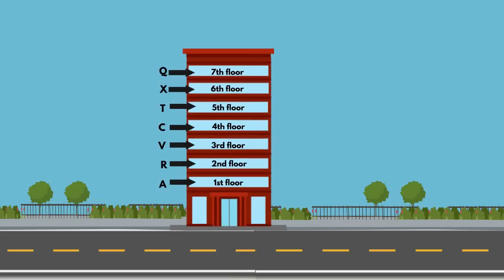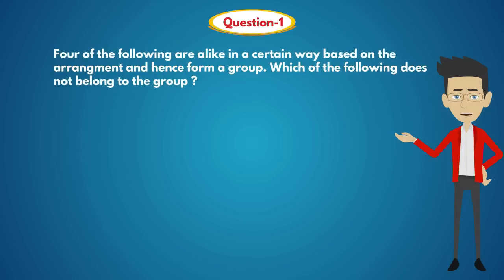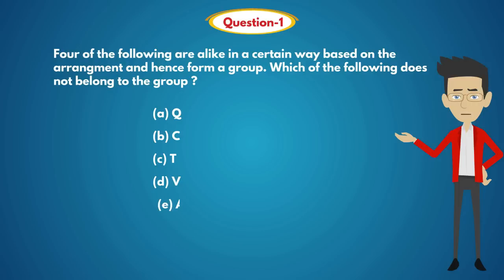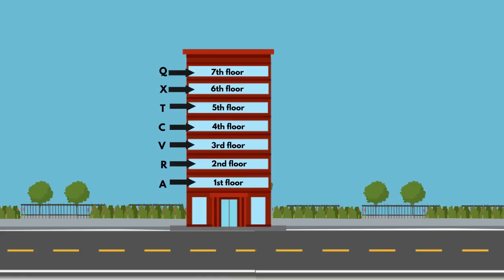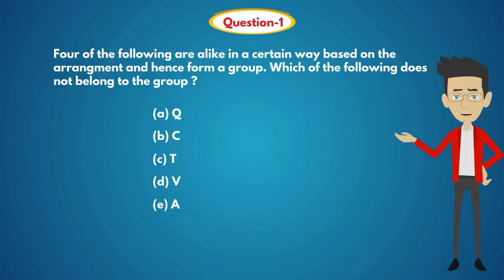The final diagram is now determined. Question 1: Four of the following are alike in a certain way based on the arrangement and hence form a group. Which of the following does not belong to the group? Options: A) Q, B) C, C) T, D) V, E) A. Solution: Q lives on the 7th floor, T on the 5th floor, V on the 3rd floor, A on the 1st floor, and C on the 4th floor. All persons except C are on odd-numbered floors, but C lives on an even-numbered floor. So the answer is Option B: C.